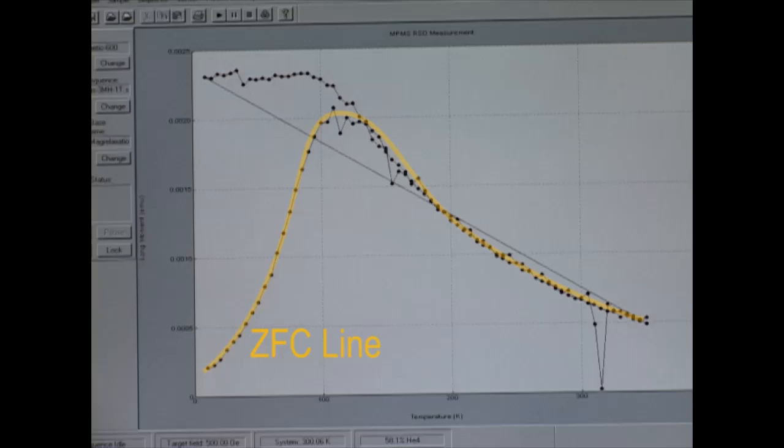In this output, the zero field cooled ZFC line shows the magnetism over a range of temperatures with no magnetic field. The field cooled FC line shows the sample magnetism with an applied 500 OE field as the temperature range is scanned.